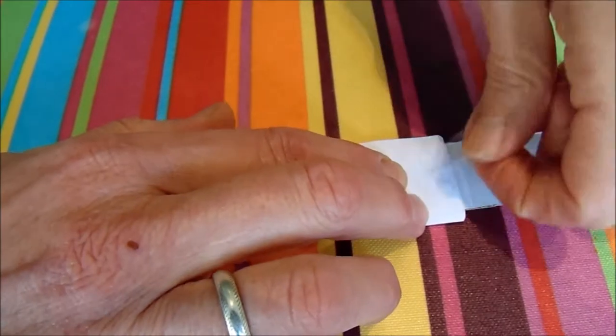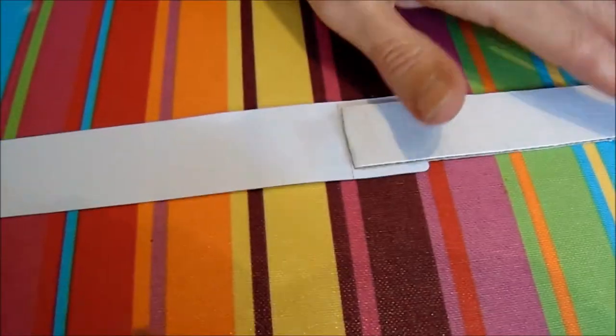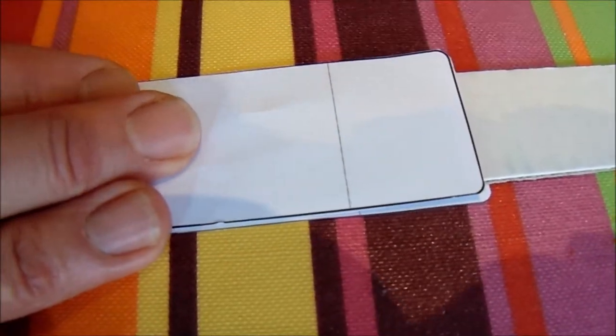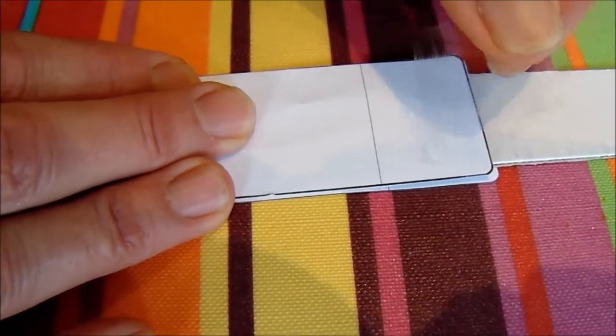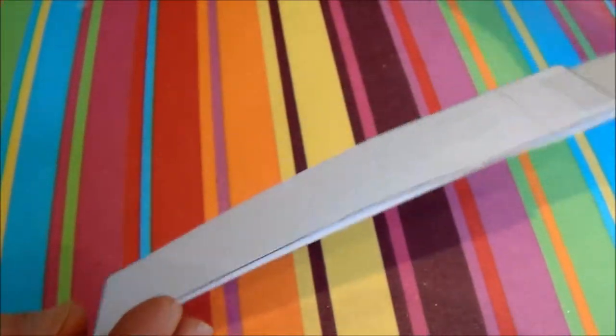You can see we're doing it twice, sticking twice to give it more security. Then turn it over and take wing two, again with the dotted line at the top of the strut, and you put that and stick that down as well. Job done.